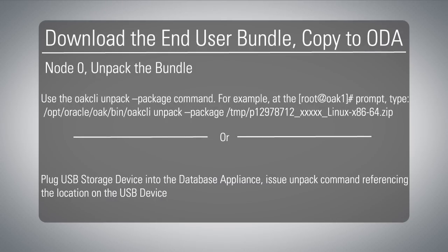Now we have to unpack this zipped end user bundle so that we can do the actual deployment. If you've copied the end user bundle file up to the database appliance, go ahead and issue the appliance manager command oakcli unpack -package, and give it the absolute path to the file name of that zipped end user bundle. If you used the alternate USB method, issue oakcli unpack -package but point to the location on the USB device. Let the unpack run, then you'll be ready to deploy.